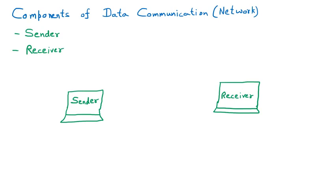Now the sender is going to send data. If I am the sender and I want to send to you, I will have some kind of information or data. That information or data is the message. So the sender has some kind of message that it is going to send, and the next component of data communication is the message.